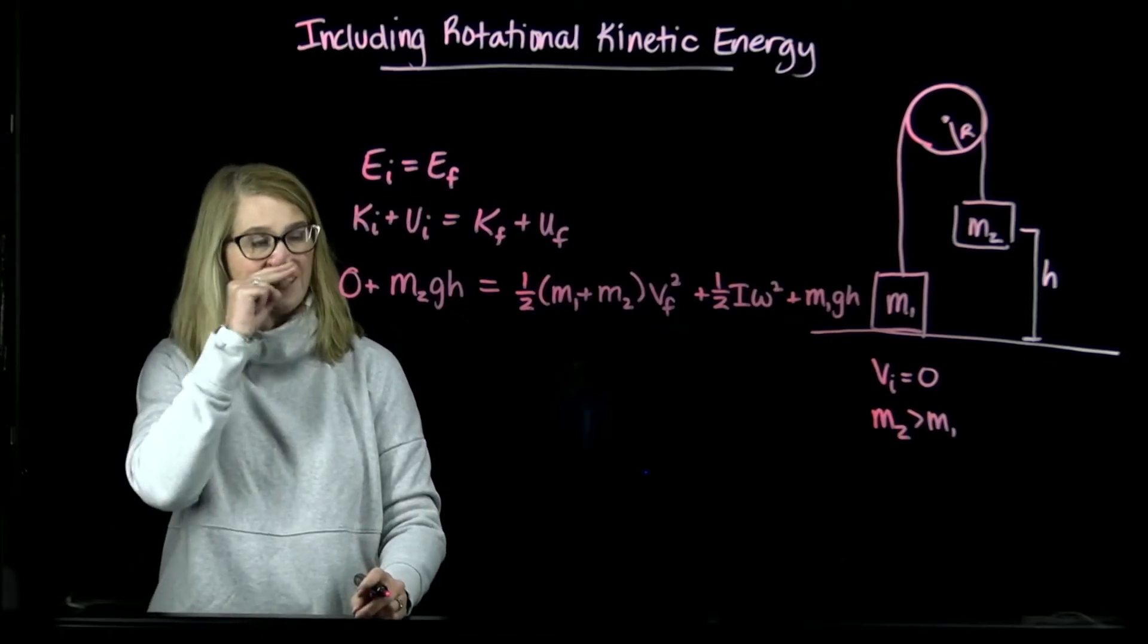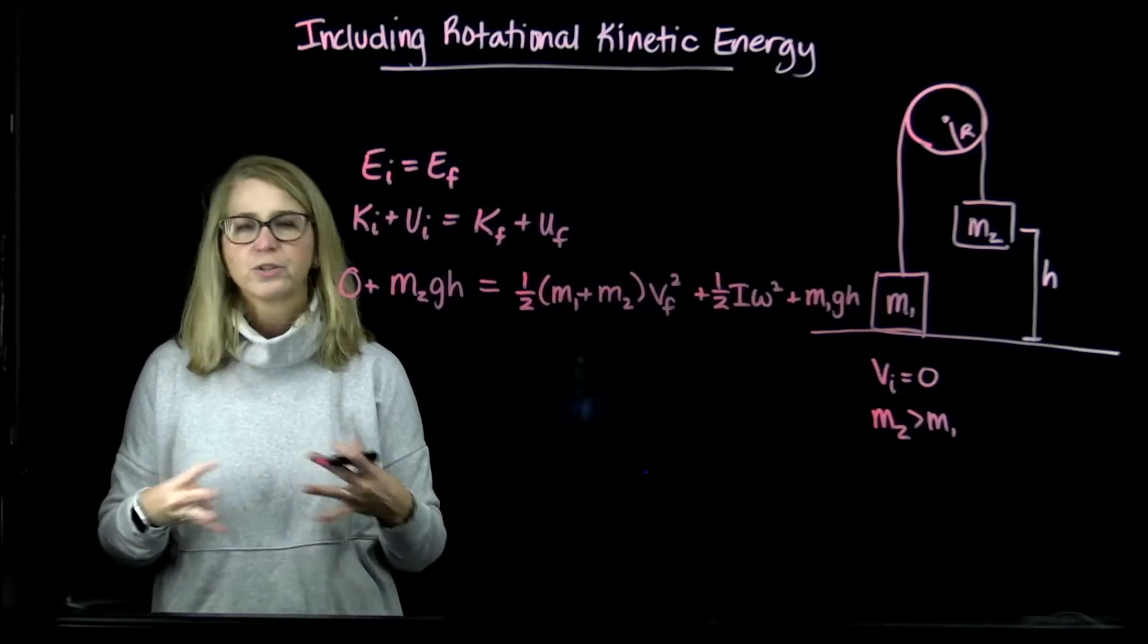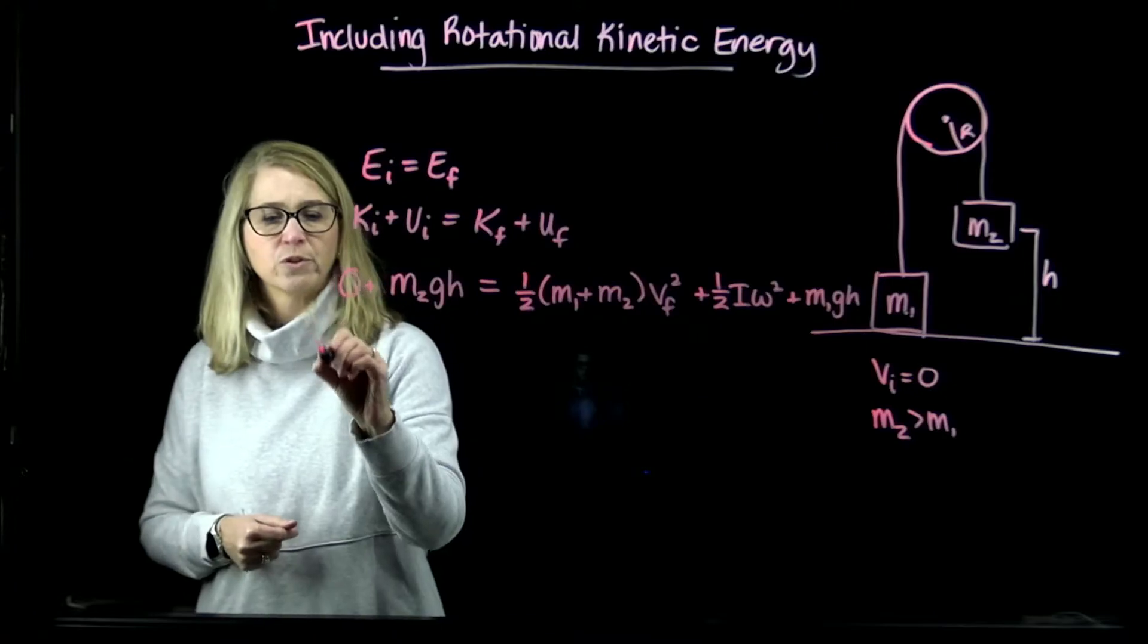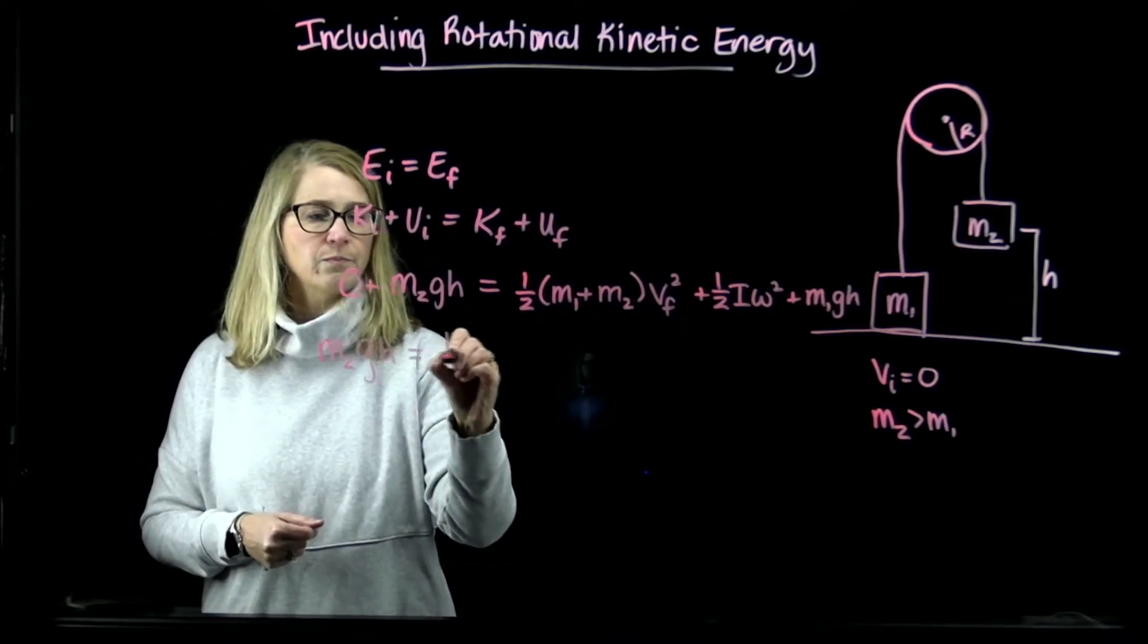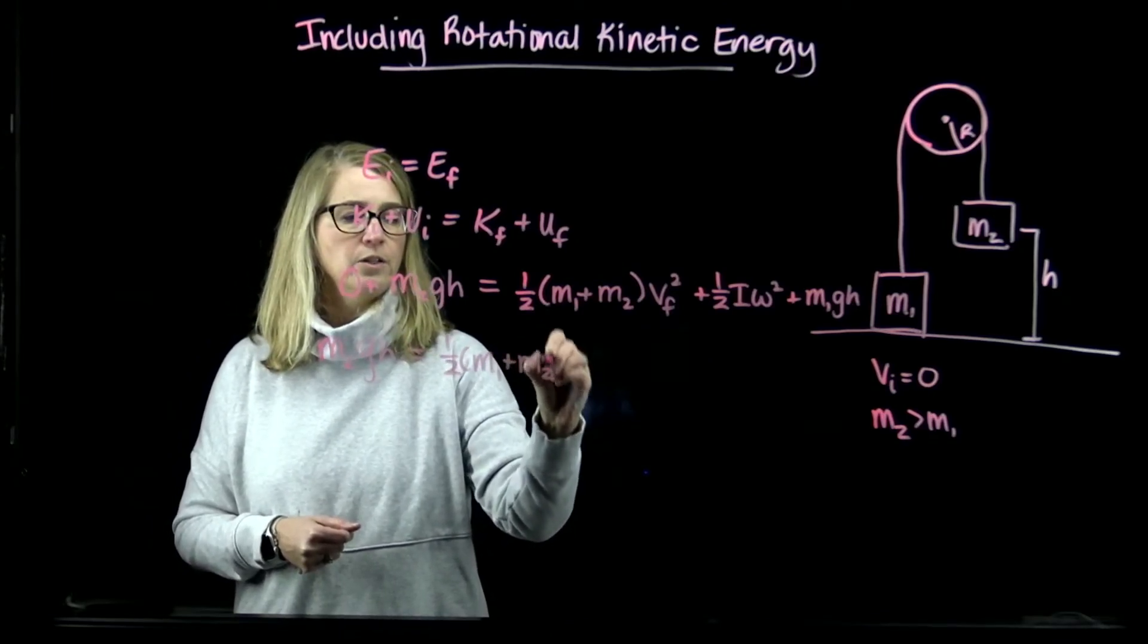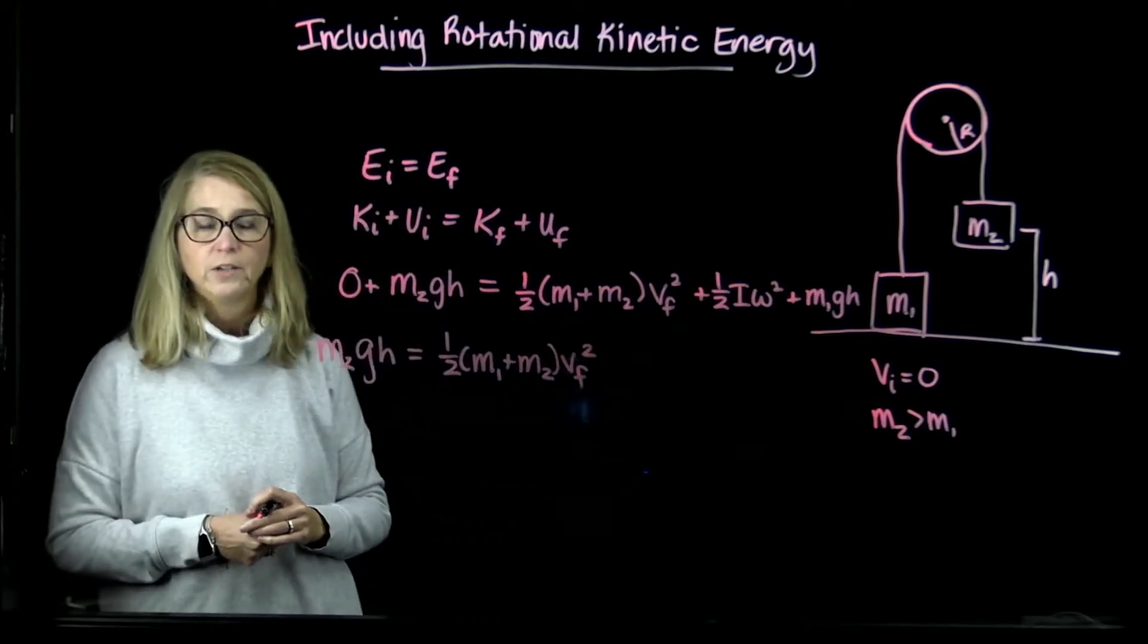Now let's simplify this a little and let's just think about how we could solve for the final velocity. I'm going to make some changes to show how we sort of combine rotational quantities with translational quantities.